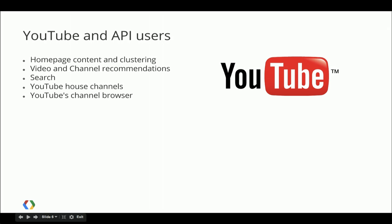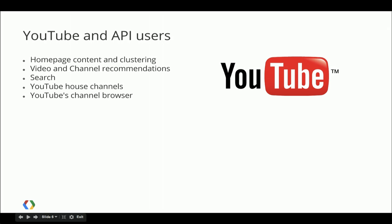Specifically, we're using it as a signal in our video and channel recommendations. And this is how some external partners have been using it in the Topics API. For example, Interesante is focused on Latino users and culturally relevant content for those users. So they look in Freebase, find related topics for things that people are interested in, find content on YouTube, and then suggest that to their users as things they can add to their collections.